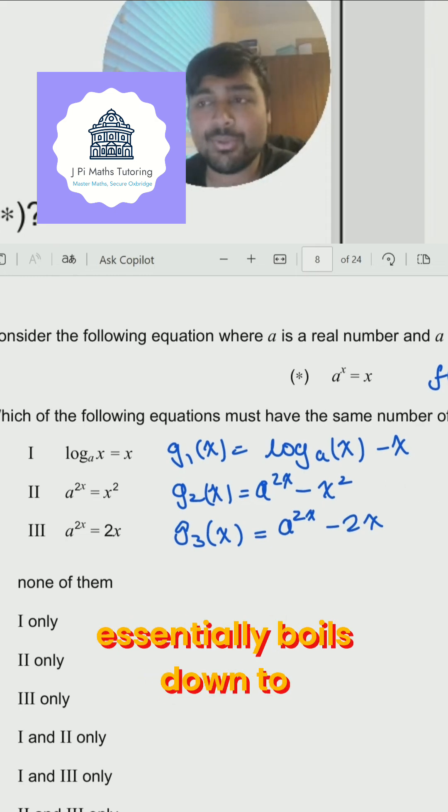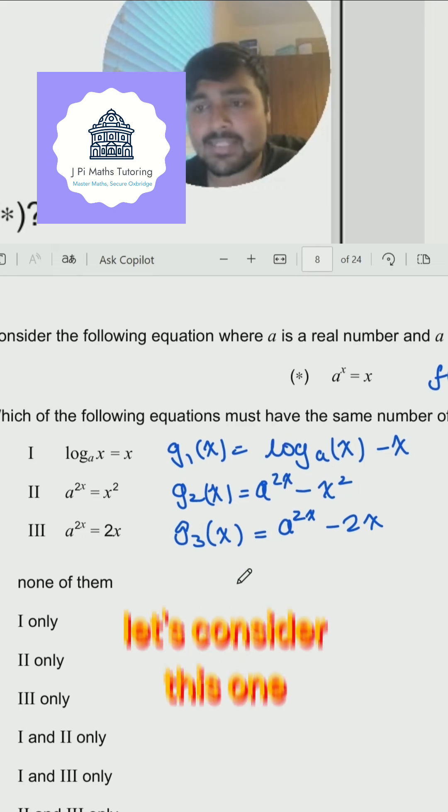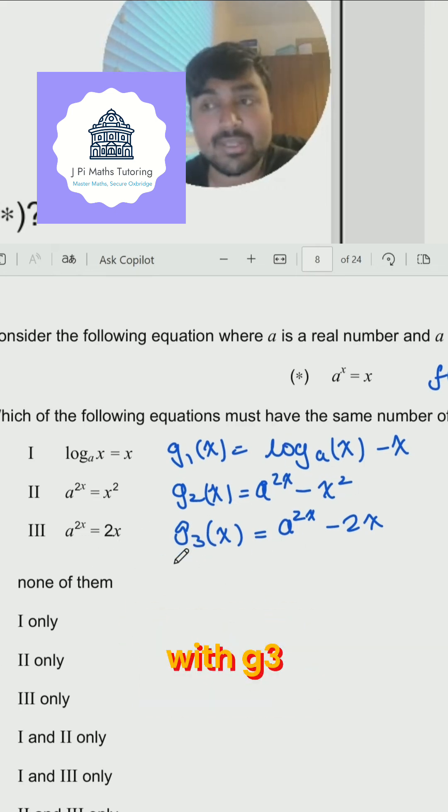And now this question essentially boils down to the number of roots f of x has. Is that ever guaranteed to be the same as the number of roots g1x has or g2x has or g3x has, essentially. Now, let's consider this one by one. I'm actually going to start with g3 because that's the easiest.